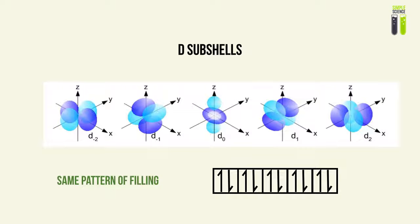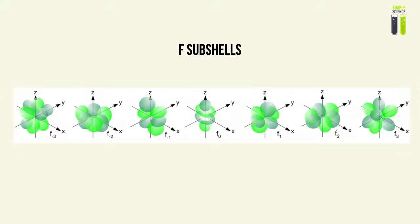The D subshell is just like the P subshell but with 2 extra boxes on its side, giving 5 boxes total, and it fills out the same way — left to right, empty boxes first before filling occupied boxes. The D subshell can contain 14 electrons with 7 boxes.